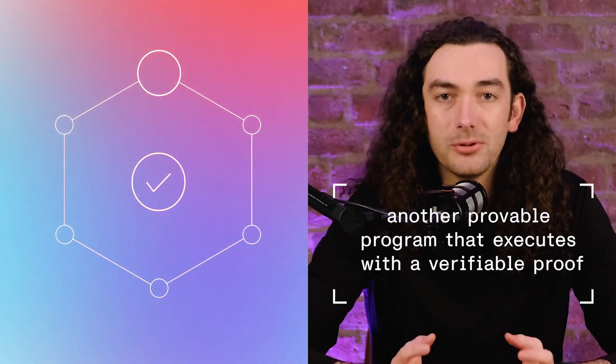ZK apps are more than just smart contracts. Now that we understand Mina's model of moving computation off-chain, let's dig into what this means. A ZK VM is just a ZK circuit — perhaps a really large one, or a collection of many ZK circuits. In its entirety, a ZK VM is just another provable program that executes with a verifiable proof. These circuits or ZK VMs are fully customizable, meaning you can develop them specifically for your application and end user's needs. They fit almost like Lego blocks onto Mina's layer one and with each other, embodying Mina's interoperable and composable ethos. These circuits or ZK VMs are written in TypeScript, which means you can embed them in any TypeScript code base.